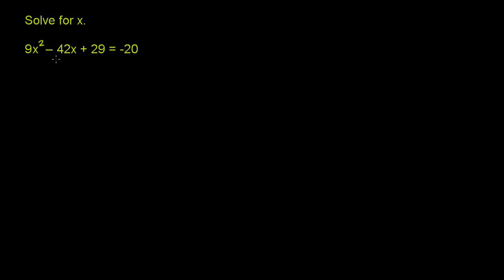That product of two binomials is only useful if they're equal to 0. Then you can say one or both of them need to equal 0. But you can't make any statement like that if they equal -20.